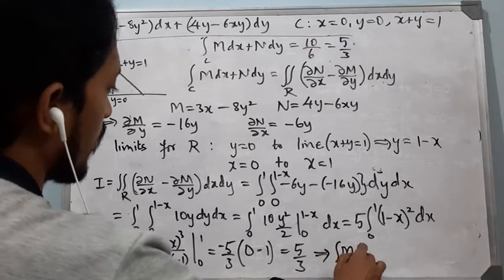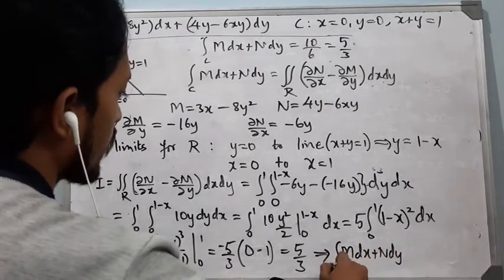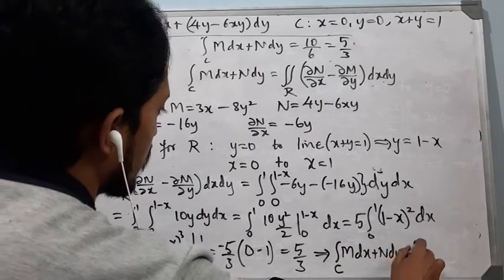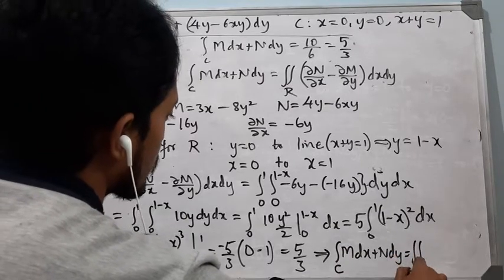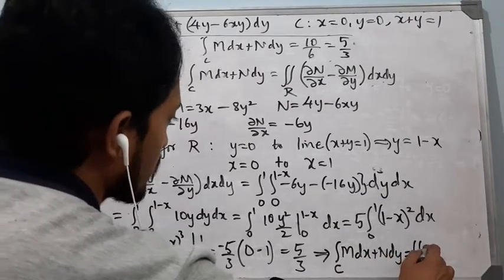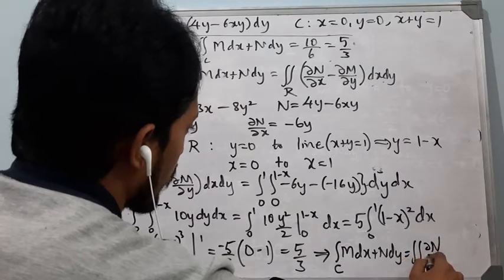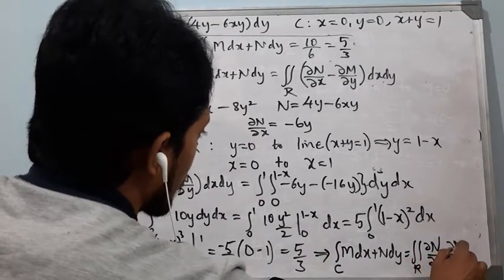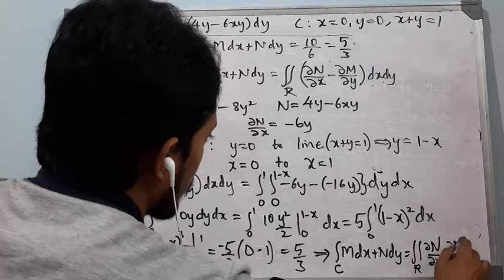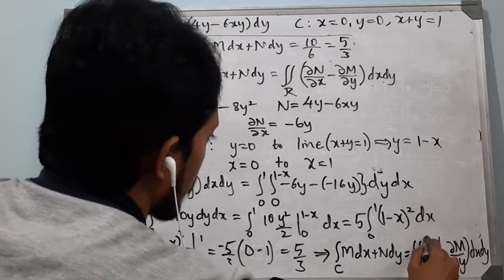We observe that the integral along C of M dx + N dy equals 5/3, which is the same as the double integral over R bounded by C of (∂N/∂x − ∂M/∂y) dx dy = 5/3. Thus Green's theorem is verified.